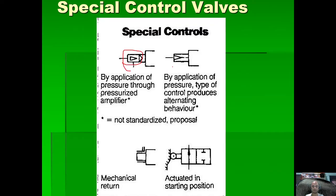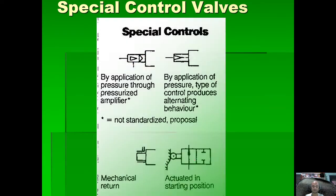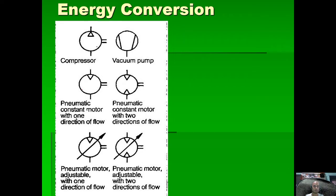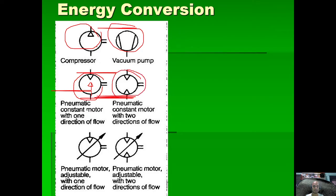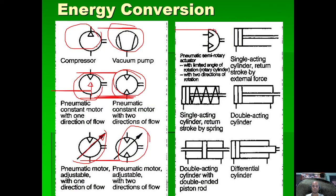This control type produces alternating behavior. We have mechanical return and actuated-in starting position. For energy conversion: a compressor or vacuum pump is shown, and a pneumatic constant motor with one direction, a pneumatic fixed motor with two directions, a pneumatic adjustable motor with one direction of flow, and a pneumatic adjustable motor with two directions of flow.